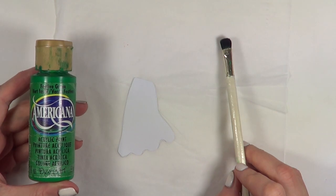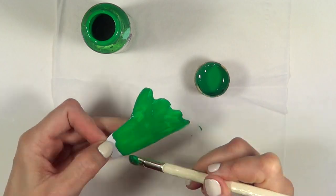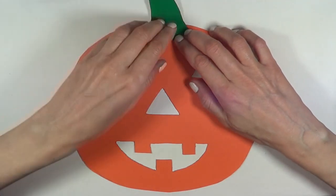Then I'm going to be using this acrylic paint, green one, brush, and I'm going to paint this. I didn't have green cardboard. Then I'm going to be using some double-sided tape to just tape those two together.